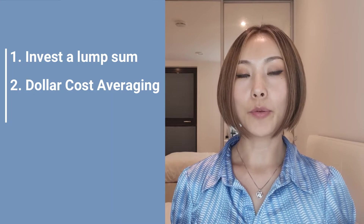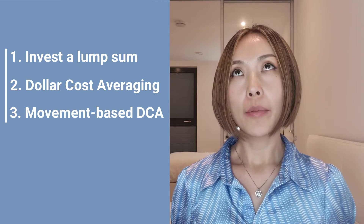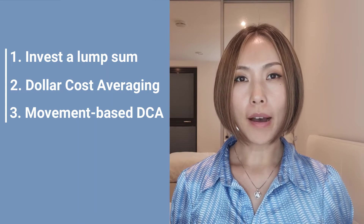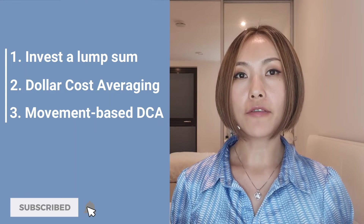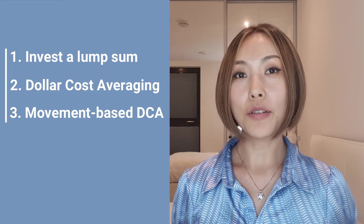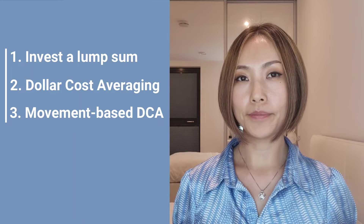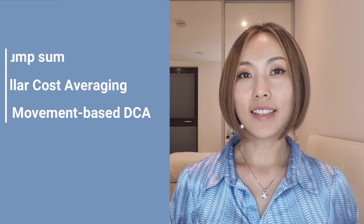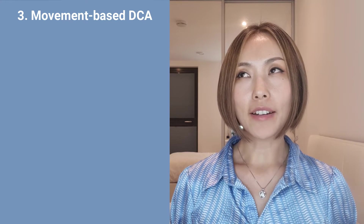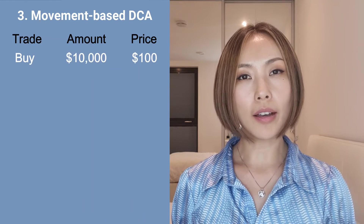The third investment style is what I call Movement-Based DCA. Like standard DCA, Movement-Based DCA also involves taking regular actions to invest, but instead of buying Bitcoin each and every month, you would either buy or sell depending on the market movement. The value of your trades would be a fixed amount based on a percentage of your initial capital. For example, let's say you decided that 10% is a good threshold for triggering trading activities.